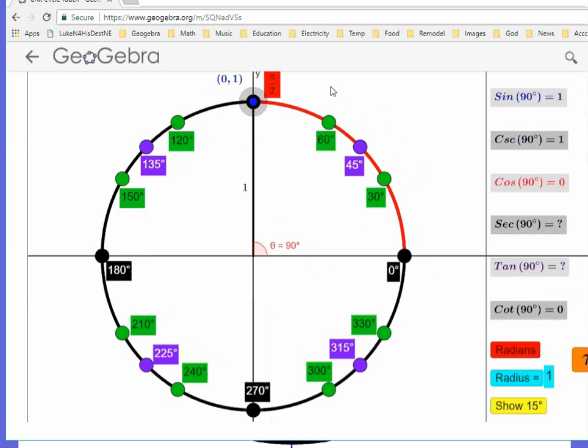You might also be wondering, what about all the other points? Aren't there infinitely many points on a circle? And the answer is yes, there are. And there's complicated ways to find those. But typically, for the unit circle, we only look at angles that are multiples of 15. And in many cases, we skip like 15, 75, 105, 165, just because it takes a lot more math to show those, and they're not as common of angles.